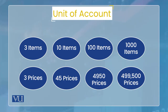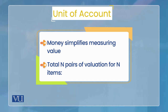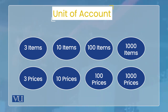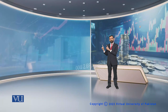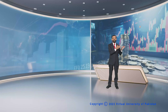اگر آپ کے پاس سو آئٹمز ہیں تو آپ کو لگ بھگ پانچ ہزار پرائیسز بتانی پڑیں گی، اور اگر ایک ہزار آئٹم ہوں تو پانچ لاکھ تک پرائیسز چلی جاتی ہیں، کیونکہ ہر چیز کی پرائیس دوسرے کی فارم میں بتانی پڑے گی۔ لیکن اگر منی unit of account ہو، تو ہر چیز کی پرائیس صرف منی میں بتانی ہے — مثلاً آم اتنے روپیز فی کلو، گندم اتنے روپیز، چاول اتنے روپیز۔ تو اگر ہزار آئٹمز ہوں تو صرف ہزار پرائیسز ہوں گی، پانچ لاکھ نہیں۔ اسی طرح جیسے medium of exchange میں منی کا فائدہ ہے، اسی طرح unit of account میں بھی بارٹر ایکانومی کے مقابلے میں منی کا فائدہ زیادہ ہے۔